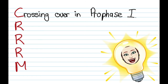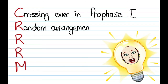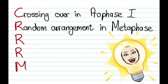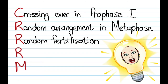Then all three R's stand for random. The first R is for random arrangement — remember to mention this happens in metaphase. The second R is random fertilization. And the third R is random mating. So we've got random arrangement, random fertilization, and random mating.